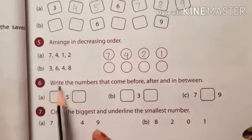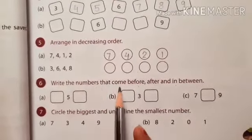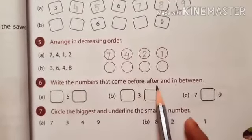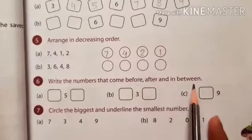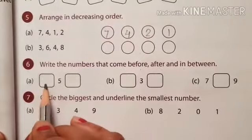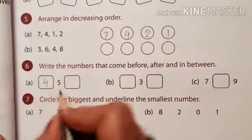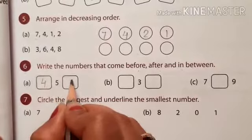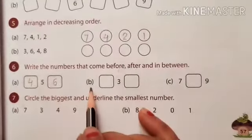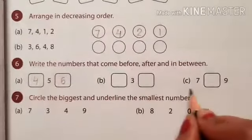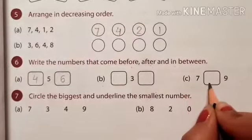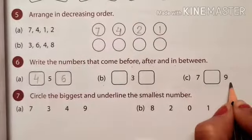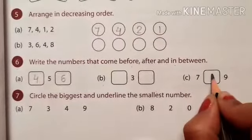Number 6. Write the numbers that come before, after and in between. A. Before 5 is 4 and after 5 is 6. B. You will do. Then C. In between 7 and 9 comes 8.